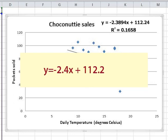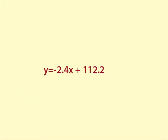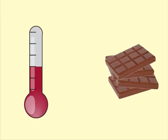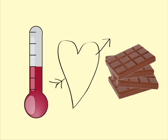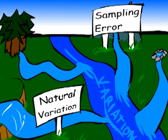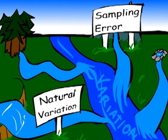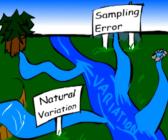Now she wishes to find out what conclusions she can draw for the population. In particular, is there really a relationship between the temperature and the sales for all days, or could this effect be due to natural variation and sampling variation or sampling error?